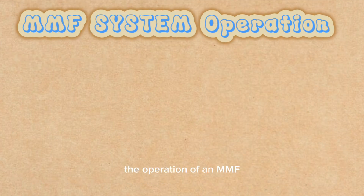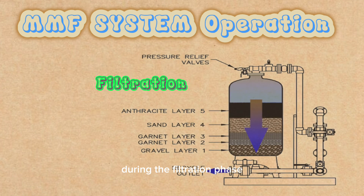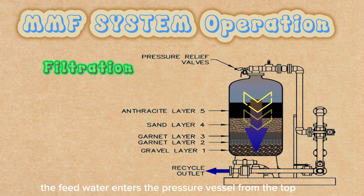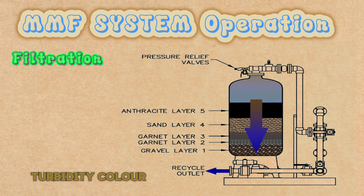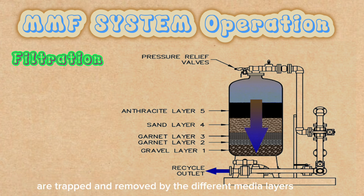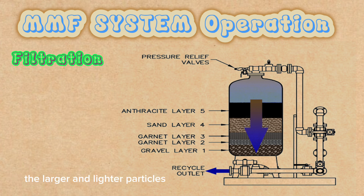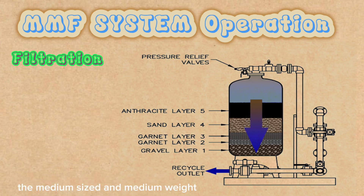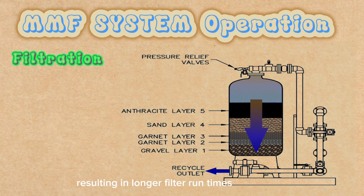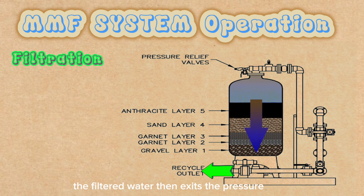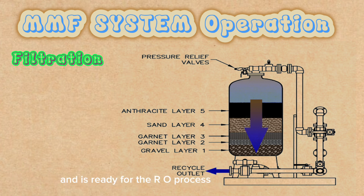The operation of an MMF system can be divided into two phases: filtration and backwash. During the filtration phase, the feed water enters the pressure vessel from the top and flows downward through the filter media. As the water passes through the filter media, the suspended solids, turbidity, color, and microorganisms are trapped and removed. The larger and lighter particles are retained by the anthracite layer, the medium-sized and medium-weight particles by the sand layer, and the smaller and heavier particles by the garnet layer. This allows the entire depth of the filter media to be used for filtration, resulting in longer filter run times and lower pressure drop. The filtered water then exits the pressure vessel from the bottom and is ready for the RO process.